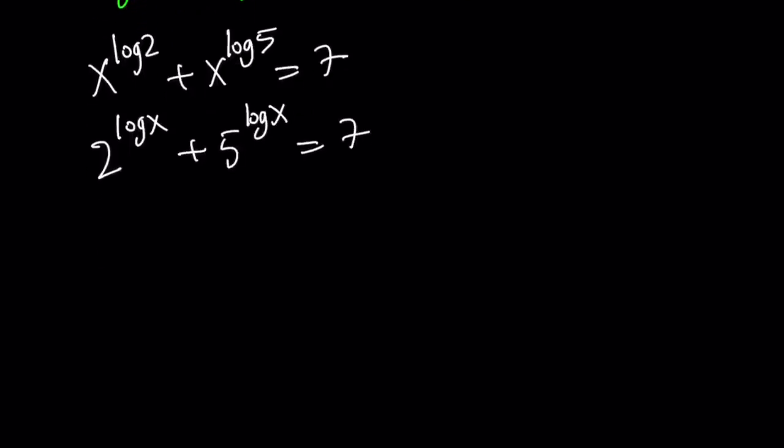Now x to the power log 2 can be written as 2 to the power log x, and the second one can be written as 5 to the power log x. The 7 doesn't change. This is nice because now we have the same exponent. That doesn't mean we can combine them, but it makes it easier. Let's replace log x with something. How about t?